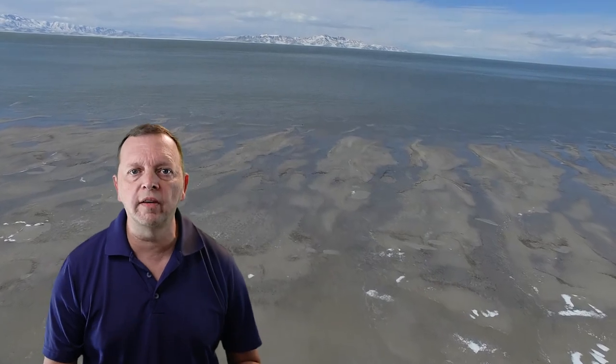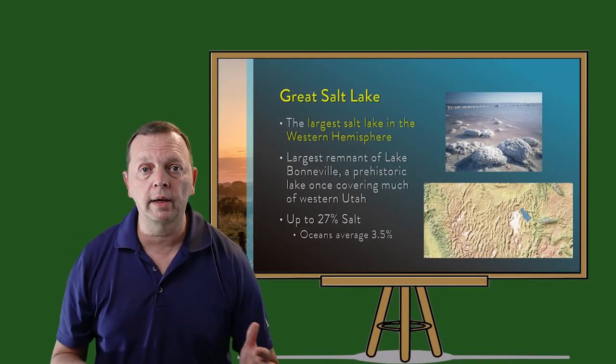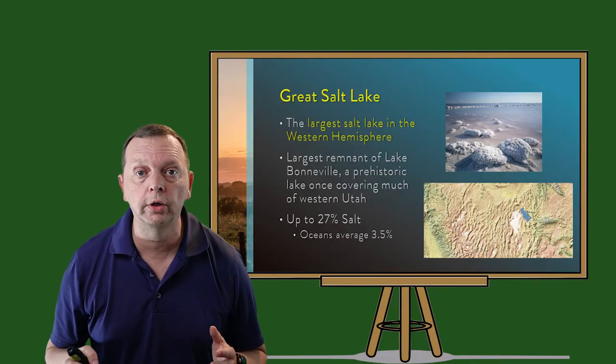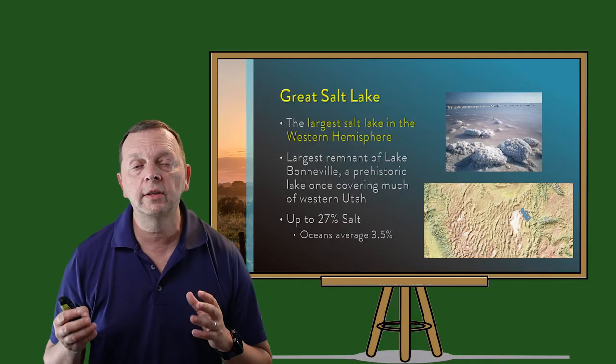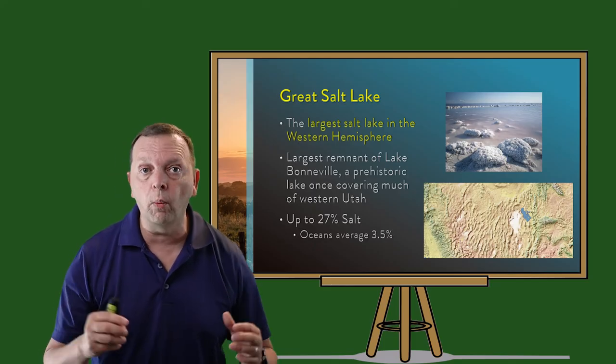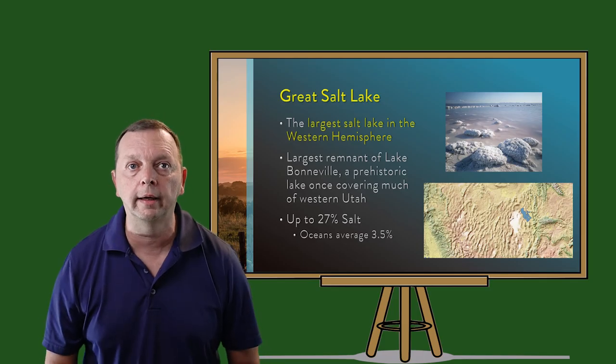Today the Great Salt Lake is one of the top 10 saltiest lakes in the world. Our oceans average about 3.5% salt, but the Great Salt Lake measures up to 27% salt. The reason it's so salty is that water flows into it from the Rockies and Sierra Nevadas but has nowhere else to go — it just sits there. As the lake water evaporates, the minerals including salt that wash down from the mountains settle, increasing the salinity of the lake.